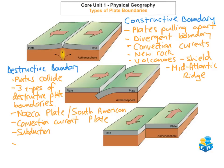You get volcanoes at destructive plate boundaries, and you can get really destructive volcanoes such as composite volcanoes — an example being Mount Etna in Sicily, Italy. You can also get ash and cinder volcanoes, and dome volcanoes — an example of that would be Mount St. Helens in the USA.